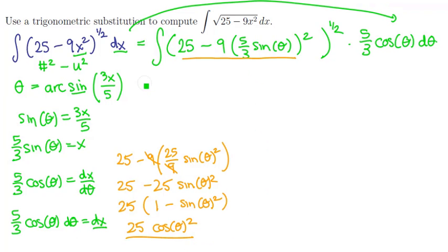This means we have a new integral. The integral of 25 cosine of theta quantity squared to the quantity 1 half power times 5 thirds cosine of theta d theta.